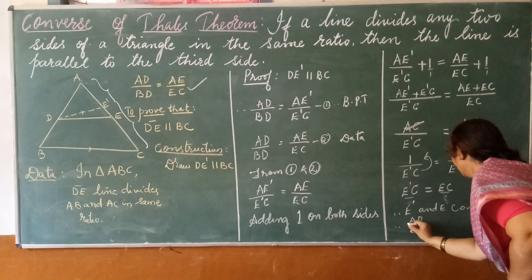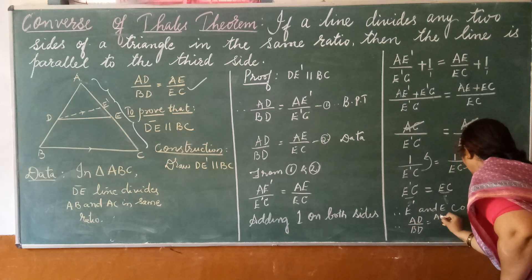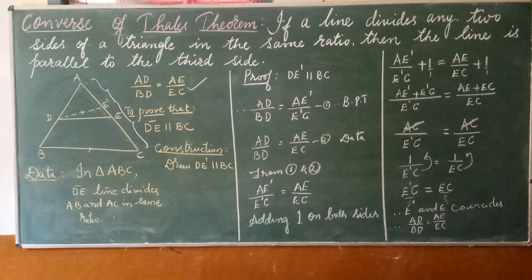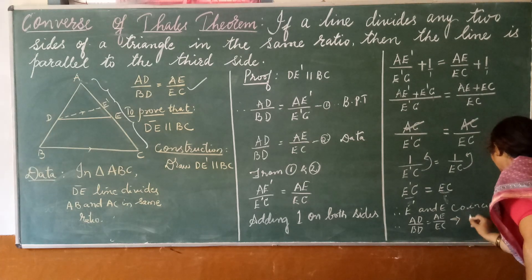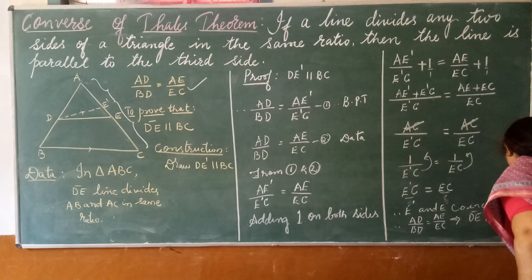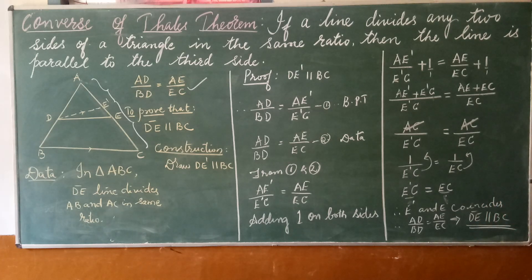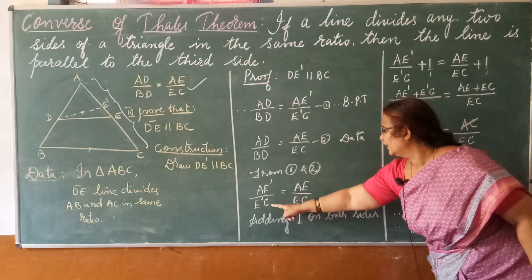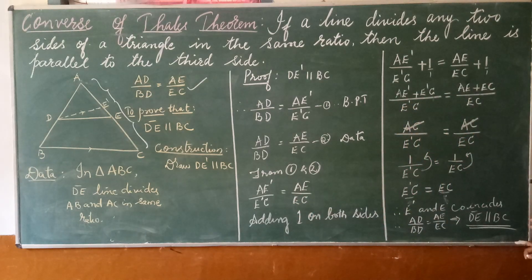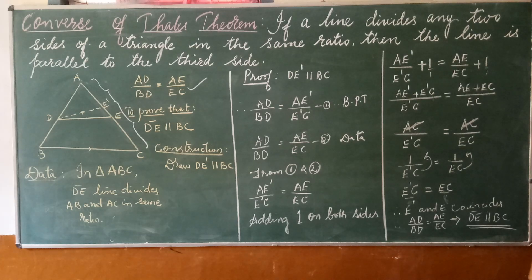Since AD by BD is equal to AE by EC and the ratios are equal, this implies that DE must be parallel to BC. If E and E' coincide, then AE' by E'C equals AE by EC, and hence DE is parallel to BC. I hope you are able to understand. If you have any doubt you can call me. Thank you children.